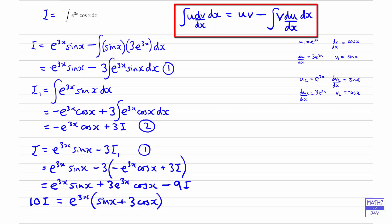All we need to do is to divide everything through by 10, and we'll have the integral that we want. So i is e to the 3x over 10, multiplied by sinx plus 3 cosx.